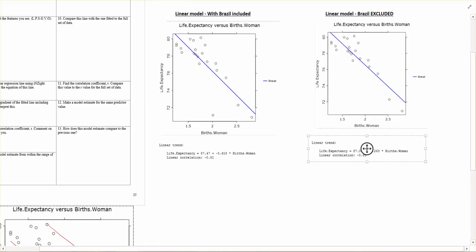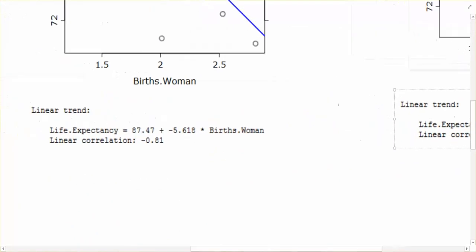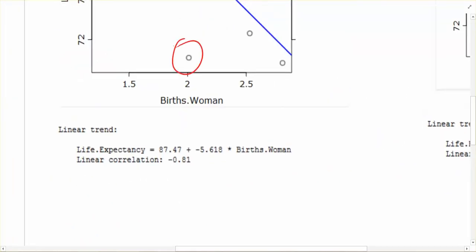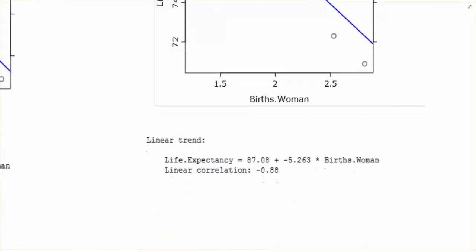Well if we actually look for some evidence on that too. If we look at the gradient of the equation. When Brazil was still in there, the gradient was negative 5.6, negative 5.618. With Brazil excluded, the gradient's now less steep, negative 5.3.